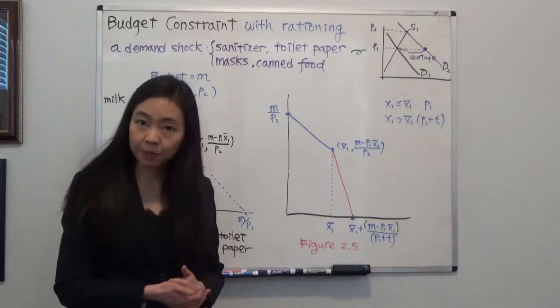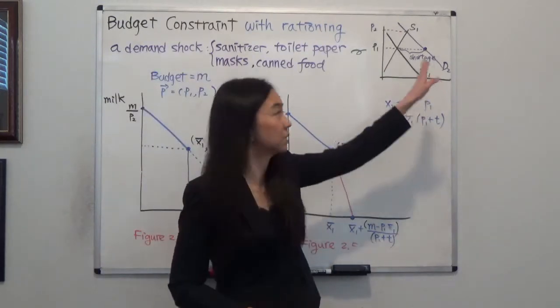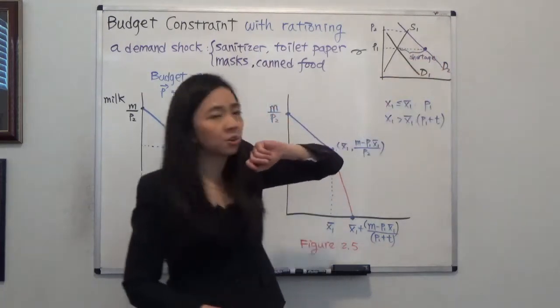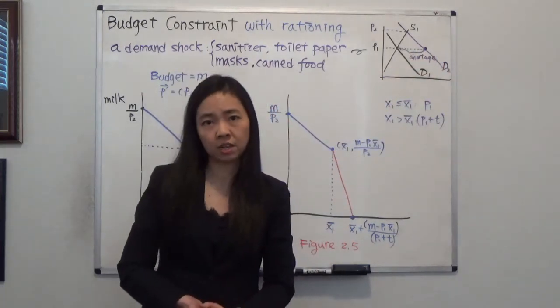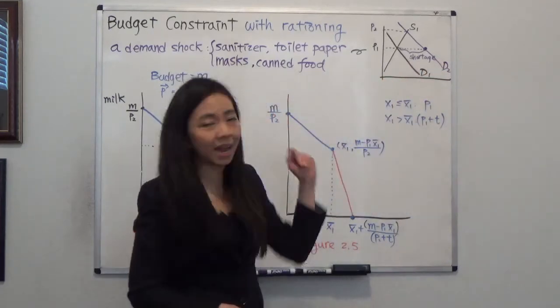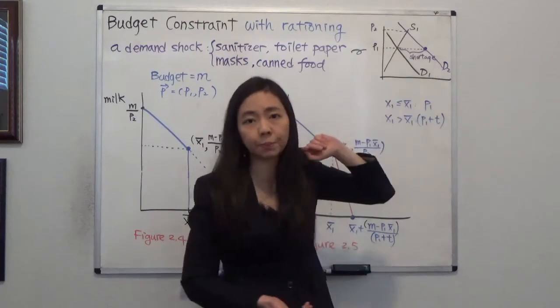So what happened with this? When there is a shock in demand, so demand all of a sudden increased. And we know that from principles of microeconomics, when demand increases, then what happens is that eventually the equilibrium price will go up.